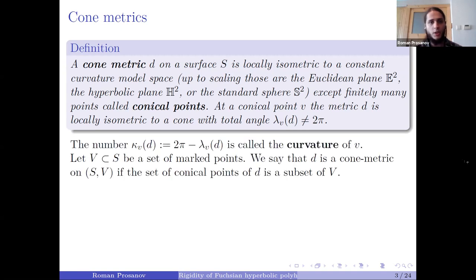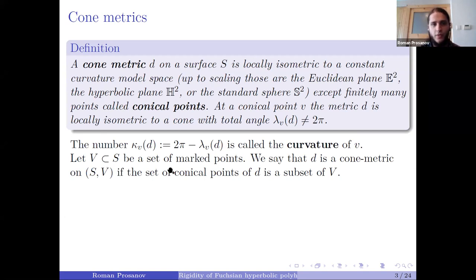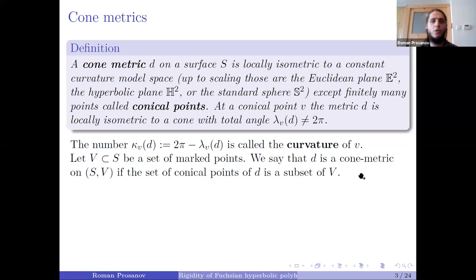It is traditional to say that the quantity 2π minus the total angle at a singular point is called the curvature of that singular point. If I have a surface with a finite set of marked points, I say that d is a metric on the pair (surface, set) if the set of conical points of my metric is a subset of v — some points of v may be assigned total angle 2π in metric d.